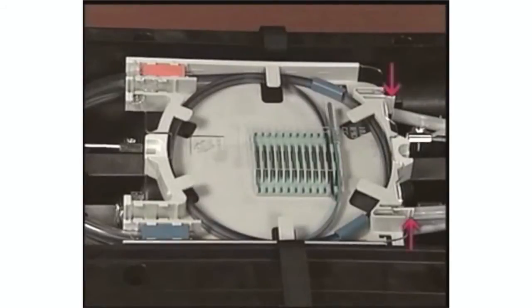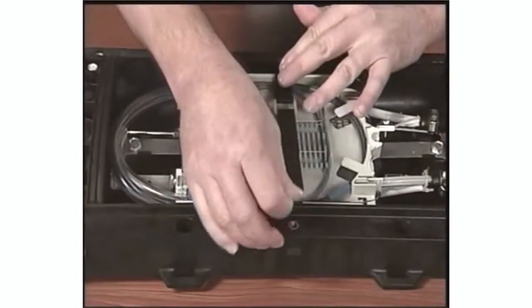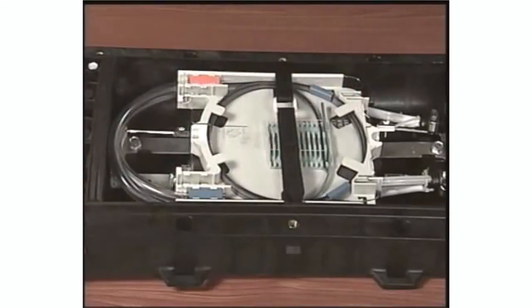For cover removal, compress tabs inward and rotate cover upward. Thread end of Velcro strap through the buckle and tighten to secure the trays.